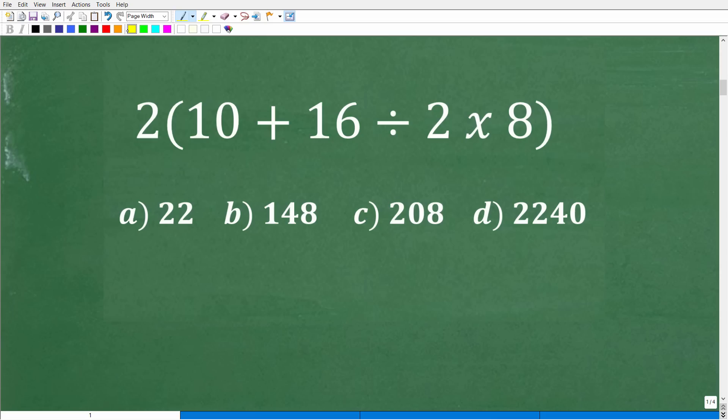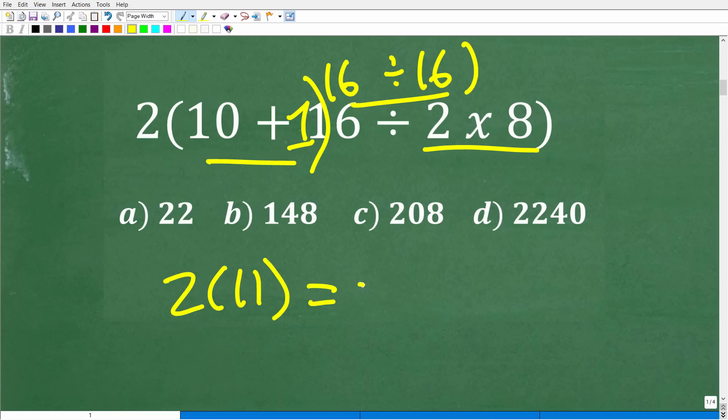For example, let's say I'm in the mood to do multiplication first. We can go 16 divided by 2 times 8, which is 16. So you might say, well, I want to do division next. So 16 divided by 16 is 1. So now we have 10 plus 1. Then 10 plus 1 is 11, and 2 times 11 is 22. And you're like, oh, I see my answer. There it is. Because, unfortunately, that's wrong.